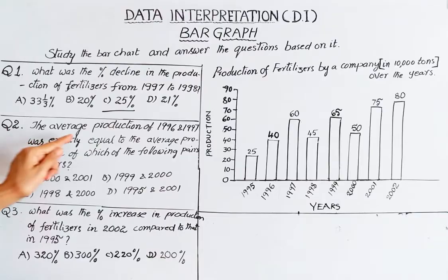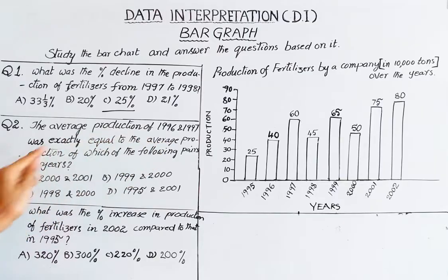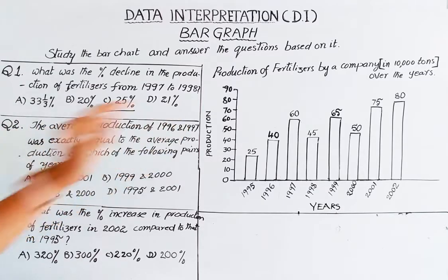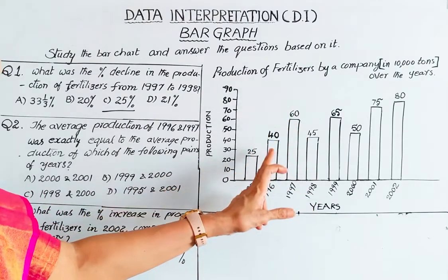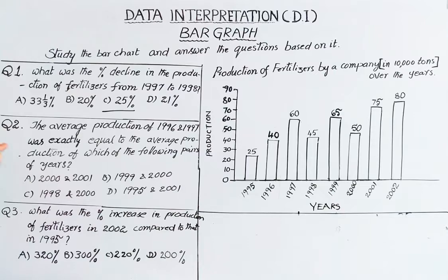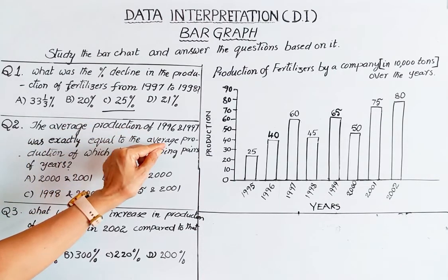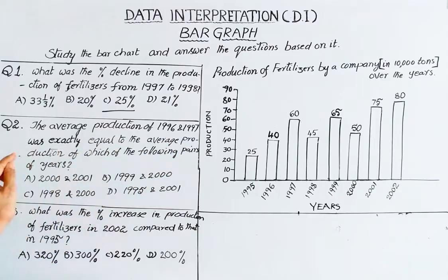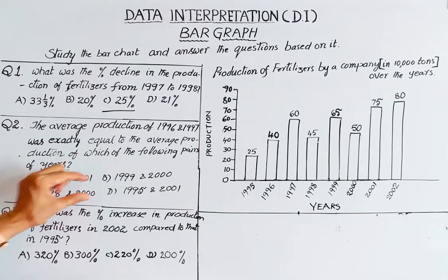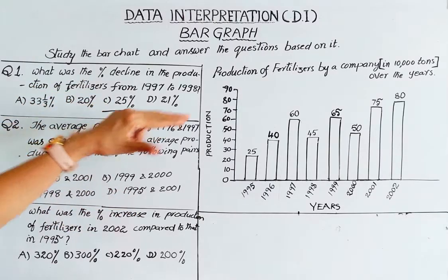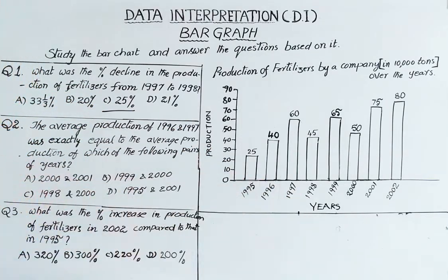Second question: The average production of 1996 and 1997 was exactly equal to the average production of which of the following pairs of years? The options are: 2000 and 2001, 1999 and 2000, 1998 and 2000. Average means sum divided by 2. The average of 1996 and 1997 must equal the average of one of those pairs.